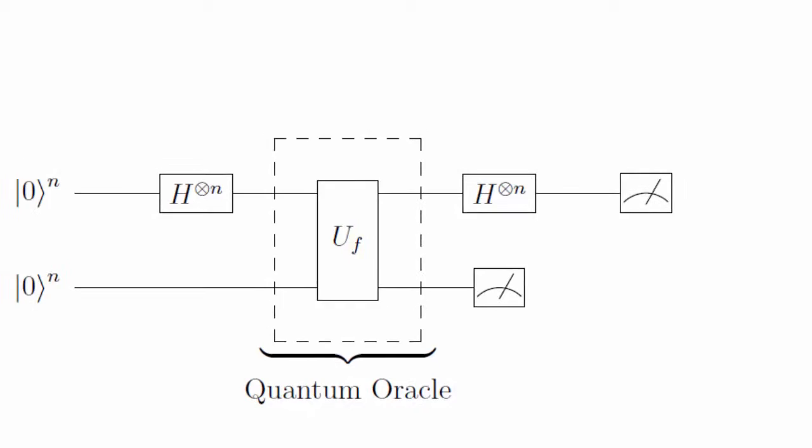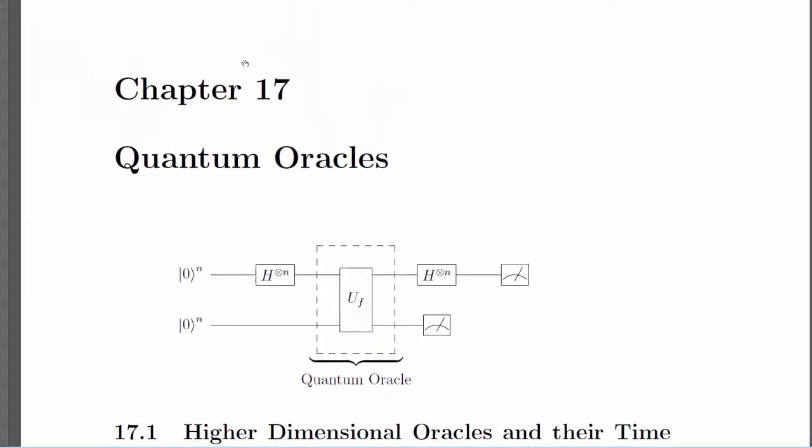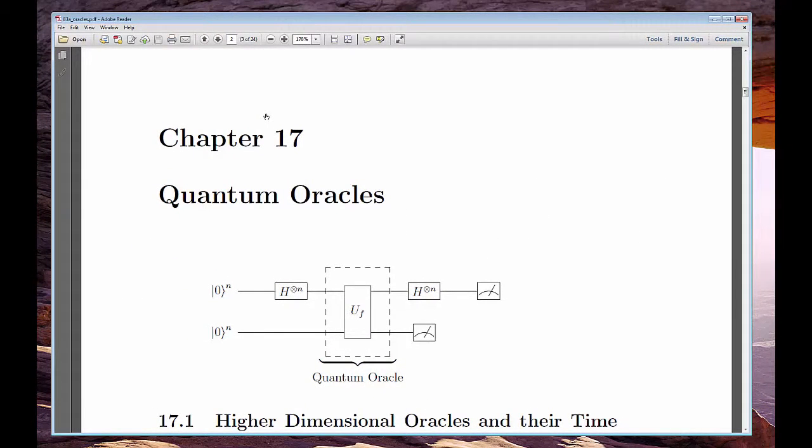I can't show you how to build an oracle from an arbitrary function. That's a craft that requires knowledge of the specific function. There are lots of papers out there that address the construction of oracles for specific Boolean functions on a onesie-twosie basis.